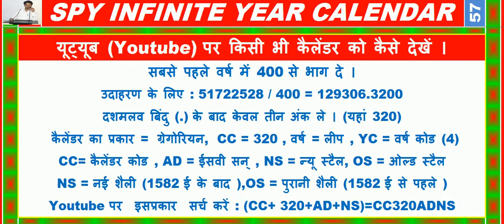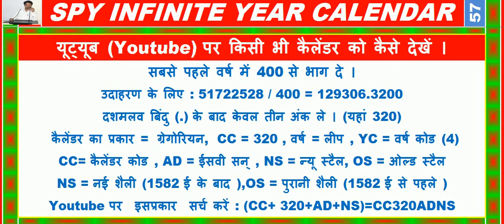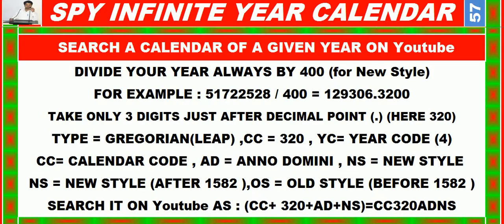Way to search the calendar of a given year on YouTube in Hindi: 3, 2, 0, ADNS. Way to search the calendar of a given year on YouTube in English: 3, 2, 0, ADNS.